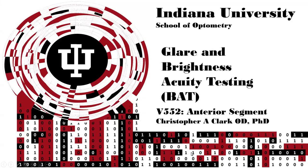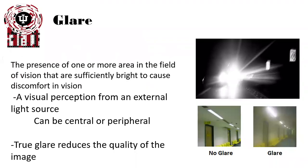This is brightness and glare testing for V551. Glare is the presence of one or more areas in the field of vision that are sufficiently bright to cause discomfort in the patient and in their vision. It's a visual perception from an external light source. This source can be centrally or peripherally located. True glare reduces the quality of the image and thereby impedes the patient's lives.